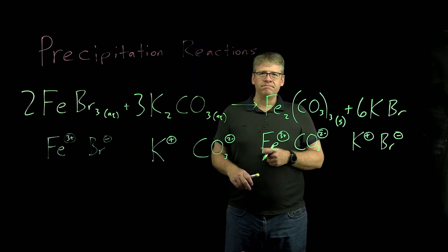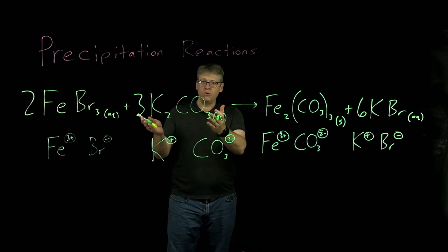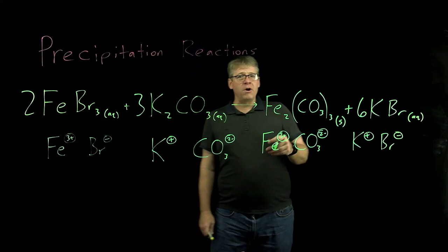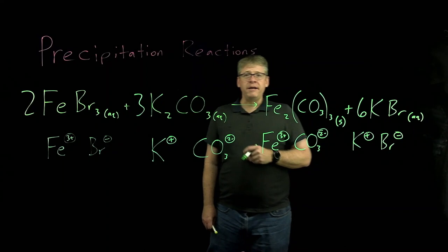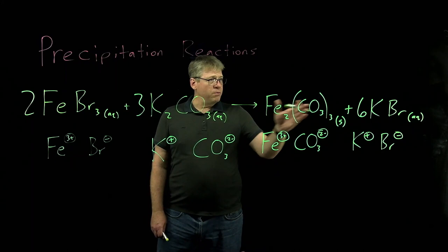Potassium bromide is very much water soluble. So what we have here is a successful precipitation reaction. We mixed two electrolyte reactants — iron-3-bromide and potassium carbonate — and made two products: iron-3-carbonate and potassium bromide, one of which, the iron-3-carbonate, is a non-electrolyte. We could isolate the iron-3-carbonate through filtration, and the filtrate that passes through the filter paper will have KBr dissolved in solution. Evaporate the water and collect that as well.